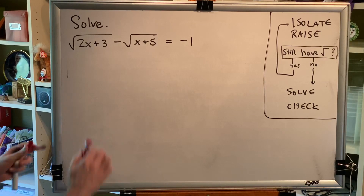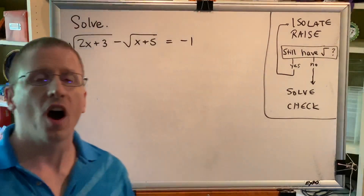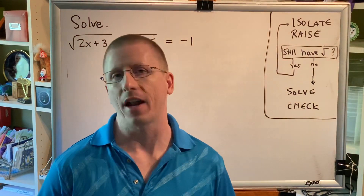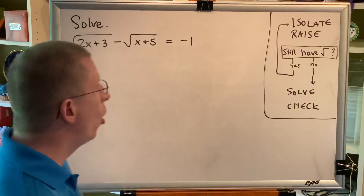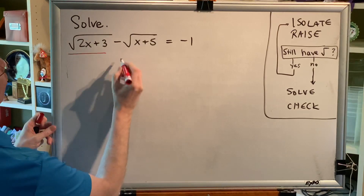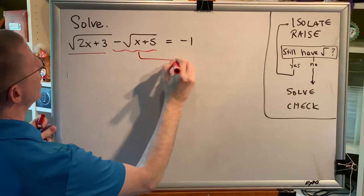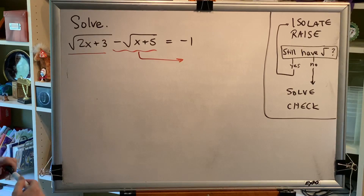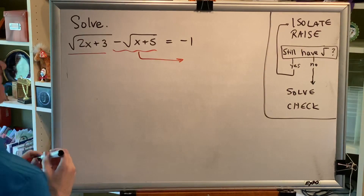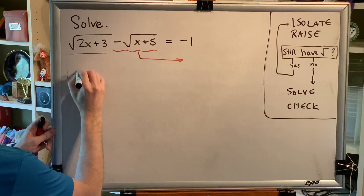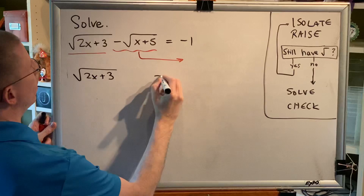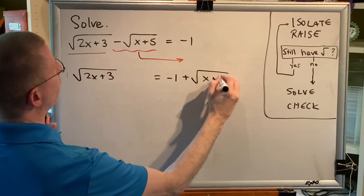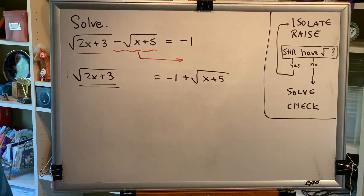Both of these radicals right now are not isolated because of the subtraction sign. Remember, if there is adding or subtracting before or after a radical, it is not isolated. One way to isolate the first radical would be to take the term being subtracted, add it to both sides of the equation, which moves it to the right side with a sign change — when a term changes sides, it changes signs. So we get: the principal square root of the sum 2x plus 3 equals negative 1 plus the principal square root of the sum x plus 5. This radical on the left is now isolated.